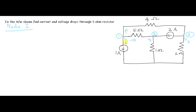When analyzing Node 1, you have to take V1 potential as higher than any other potential used in this circuit. First take V1: write V1 minus V2 divided by 5, because between V1 and V2 this 5 ohm resistor is present. Next, you have to take V1 minus V3 divided by 4.